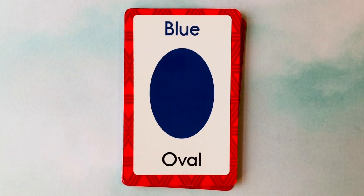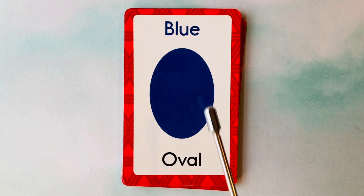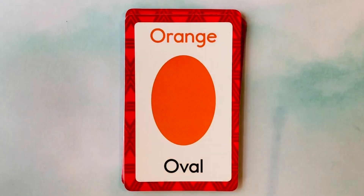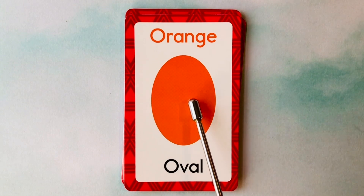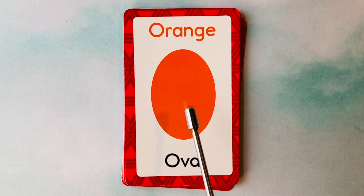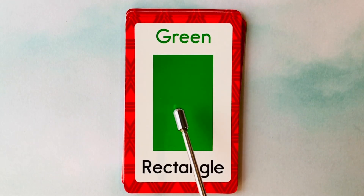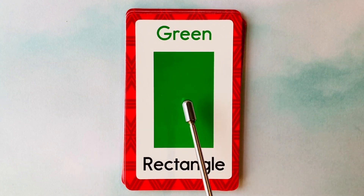Let's learn shapes and colors. This is an oval. What color is this oval? It's a blue oval. This is also an oval. What color is this oval? It's an orange oval. This is a rectangle. What color is this rectangle? It's a green rectangle.